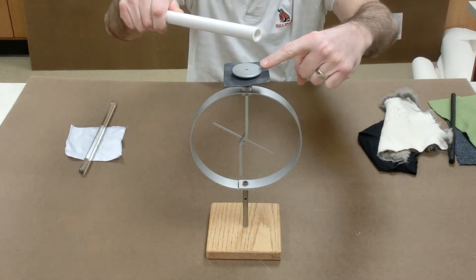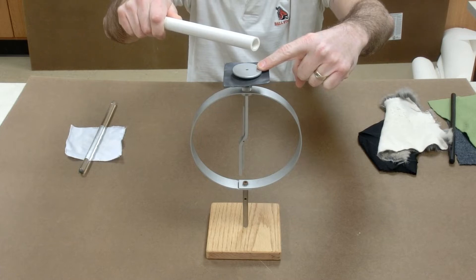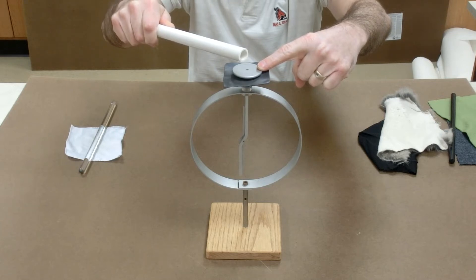If I bring my finger close by at the same time, I've created a path for electrons to actually leave the electroscope. They are being repelled from the electroscope into my body into the ground.